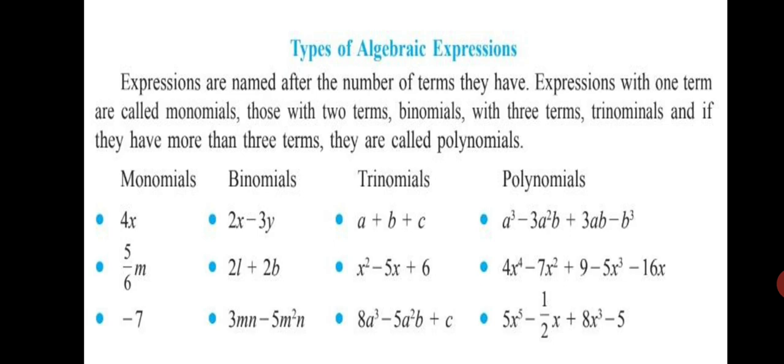Second, 4x raised to the power of 4 minus 7x square plus 9 minus 5x cube minus 16x. You will see there are five terms in this expression. So, it comes under the category of polynomials. And the last one, 5x raised to the power of 5 minus 1 upon 2x plus 8x cube minus 5. Four terms again, so it is polynomial.